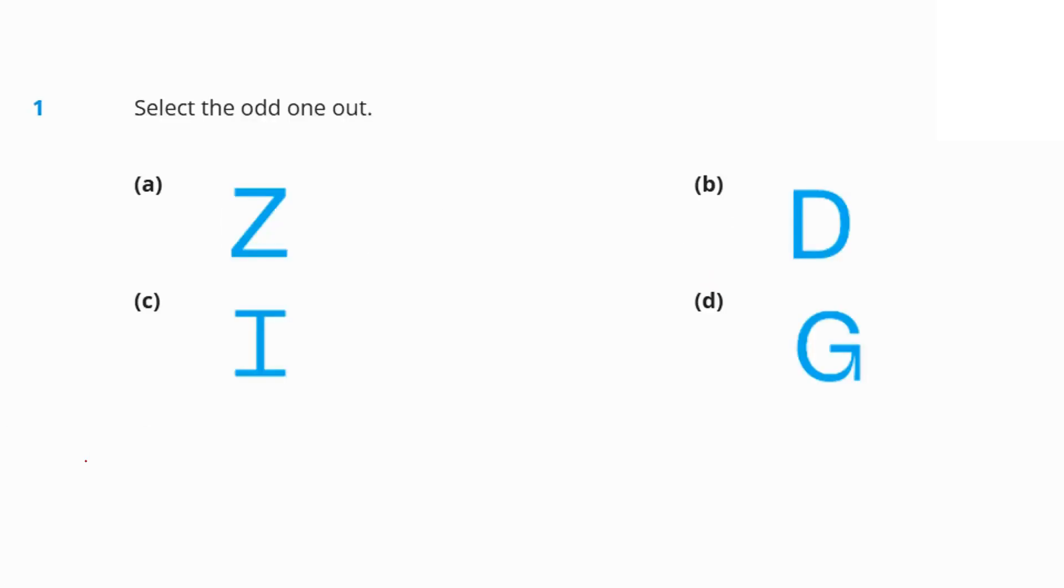The first question, select the odd one out. Over here, if we just see, what is the odd one out? Z, T, I and G. We just look into these. The only one which is symmetric, vertically symmetrical is I. We have two ways of putting I as an odd one out. The first one, the only alphabet which is vertically symmetrical is I. Secondly, I is the only vowel here, whereas rest of them are consonants. So, I is the answer.